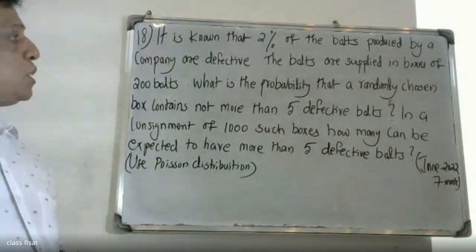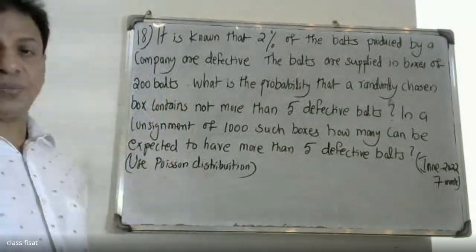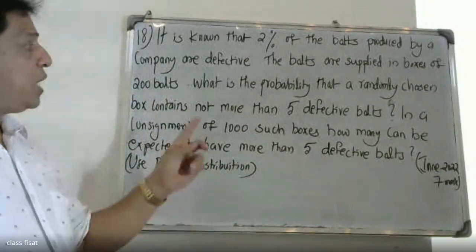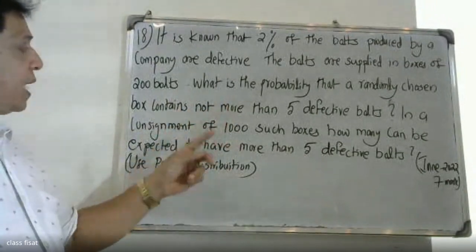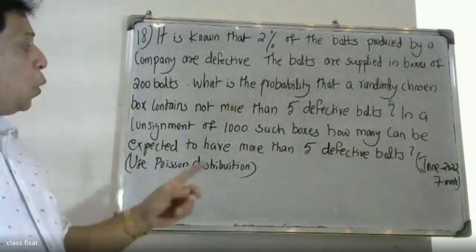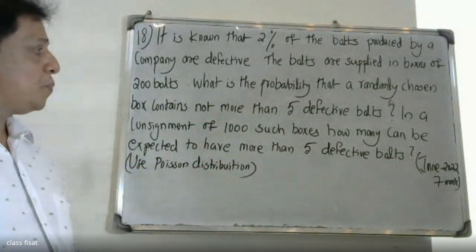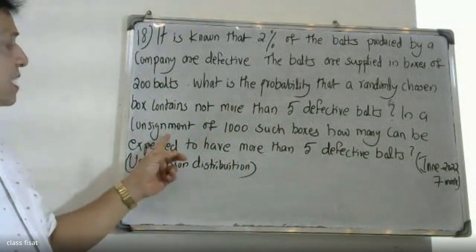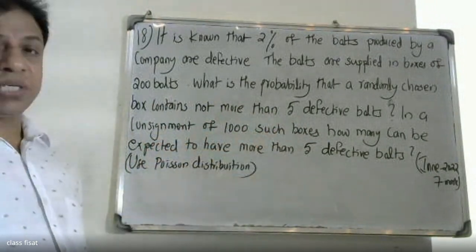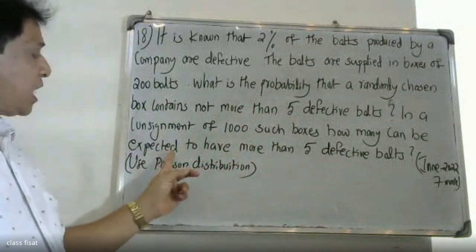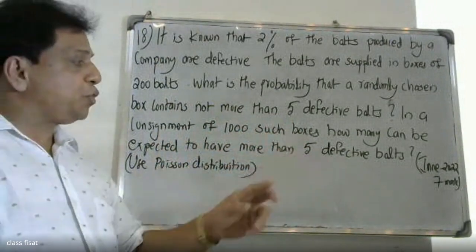The boards are supplied in boxes of 200 boards. What is the probability that a randomly chosen box contains not more than 5 defective boards? In a consignment of 1000 such boxes, how many can be expected to have more than 5 defective boards?